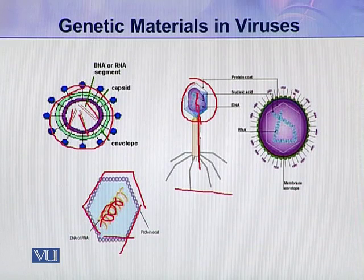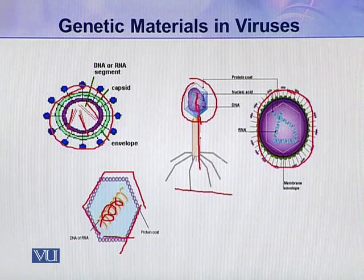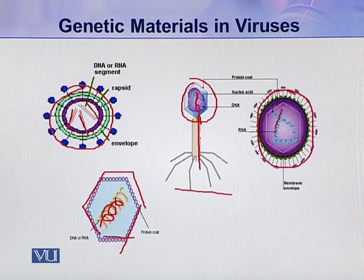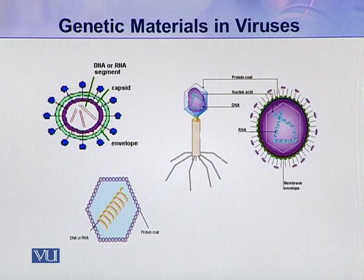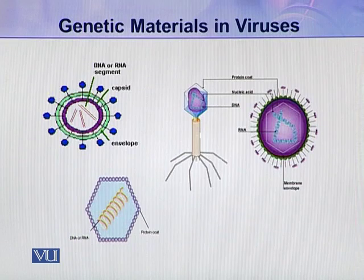Similarly, in this virus, this is the protein coat, which is also called the capsid. And inside the capsid, there is a single molecule of nucleic acid. So these are very simple types of organisms.